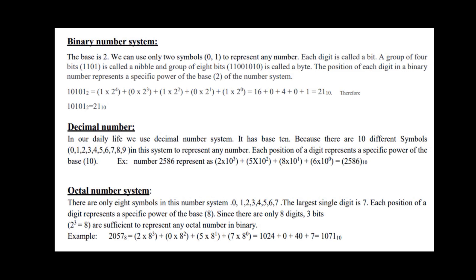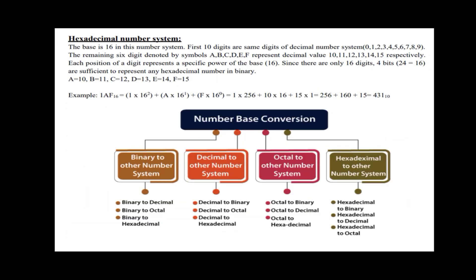In octal, the digits are 0 to 7. For example, 2 into 8 raise to 3, 0 into 8 raise to 2, 5 into 8 raise to 1, 7 into 8 raise to 0, giving 1071 base 10. Then hexadecimal: base is 16. The digits go 0 to 9, then A is 10, B is 11, C is 12, D is 13, E is 14, F is 15.